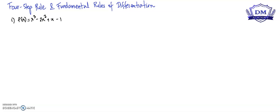Welcome to the M Academy. So let us solve this given function, f of x is equal to x cubed minus 2x squared plus x minus 1, using the four-step rule. And later on, we also have the fundamental rules of differentiation.